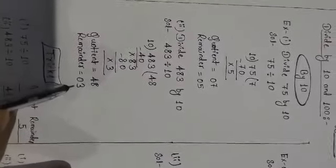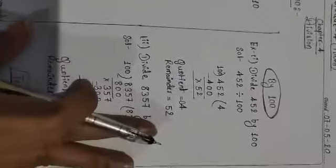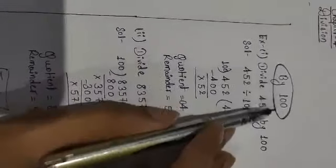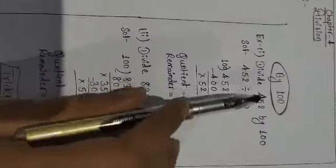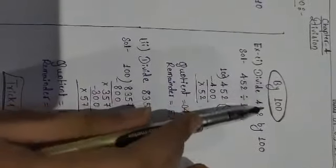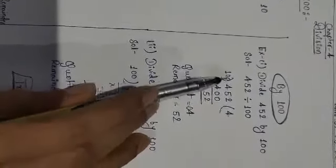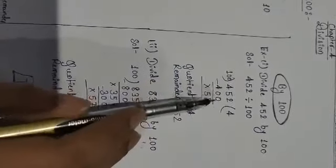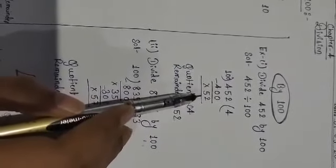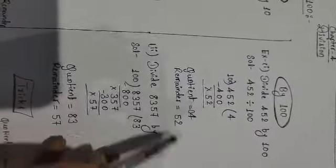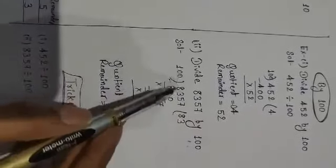In the same way you can see division by 100. The question can be framed: divide 452 by 100. Now the table of 100, so 4 times 100 is 400, and after subtraction we get 52 as a remainder.